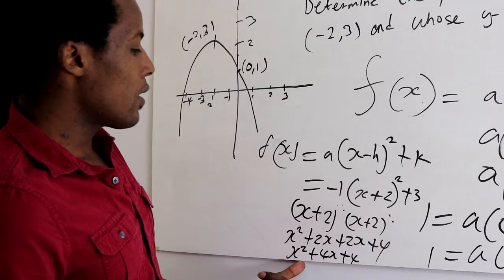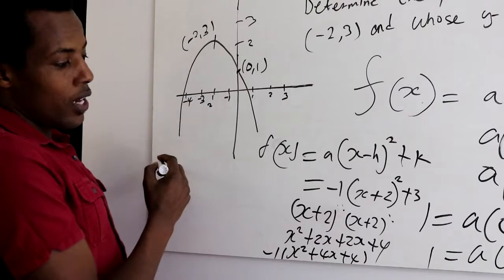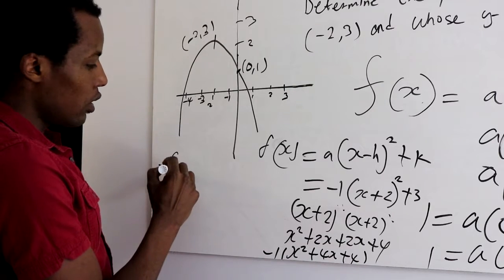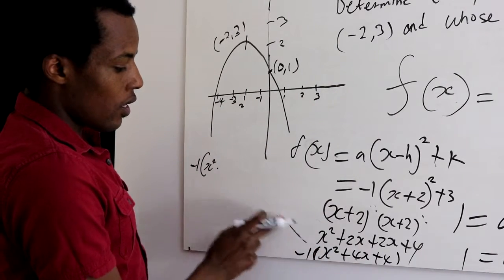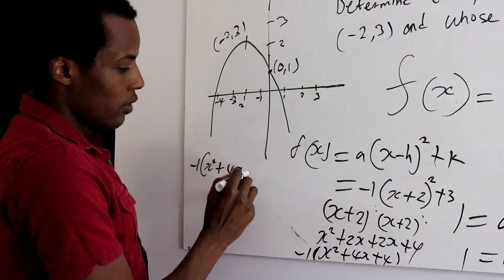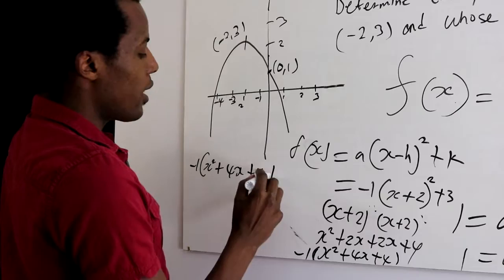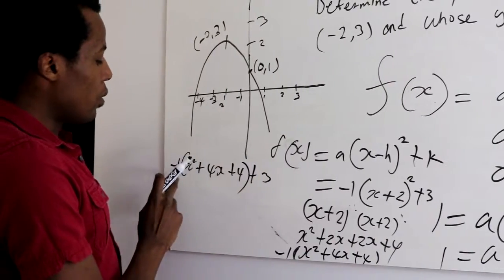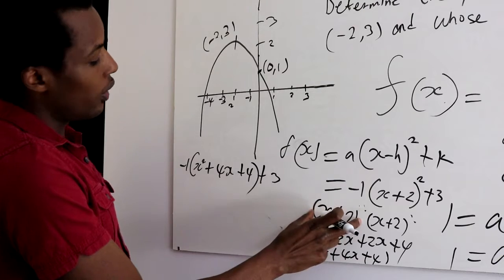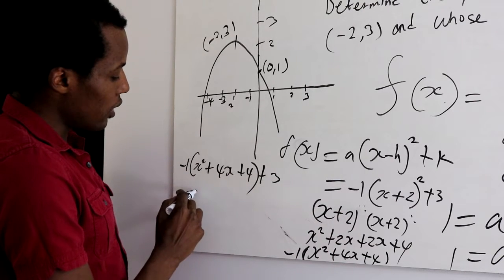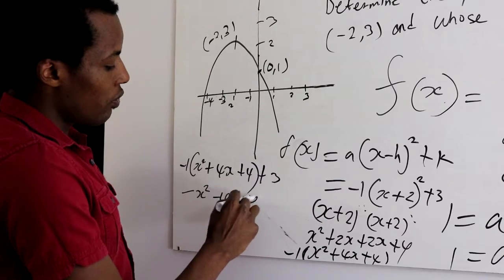And then remember we still have the negative sign outside, so our value will be negative 1 into x squared plus 4x plus 4. And remember we still have plus 3 outside, positive 3. So if you multiply the squared fraction over here by negative 1, the answer will be negative x squared minus 4x minus 4 plus 3.